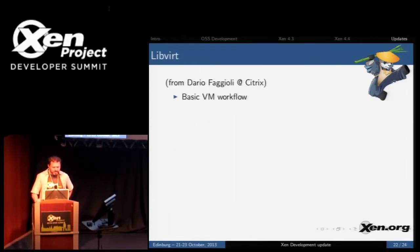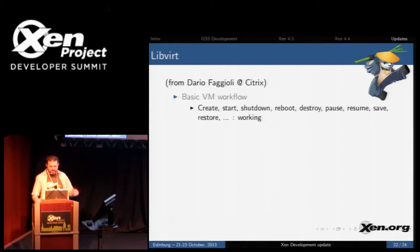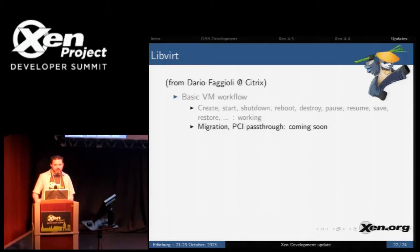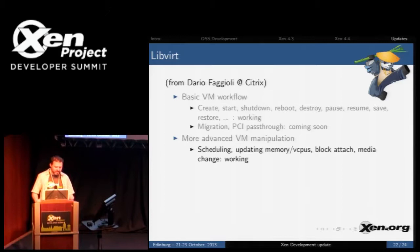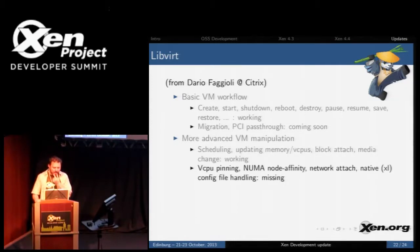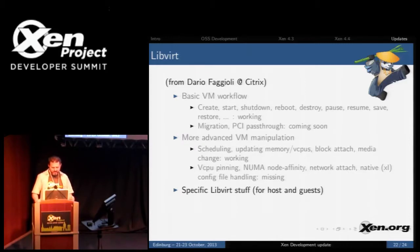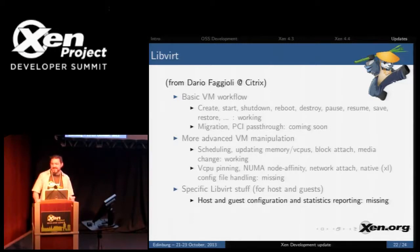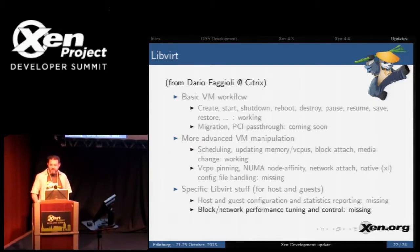LibVirt update from Dario: the basic VM workflow works — create, shutdown, reboot, and so on. Migration and PCI passthrough are coming soon. For advanced VM manipulation, a lot of things are supported: scheduling, updating memory, vCPUs, block attach, and so on. Some advanced things are not yet working: vCPU pinning, NUMA affinity. Some specific things not yet supported in LibVirt include hosting guest configuration and statistics, and block and network performance tuning controls. If you're interested in using LibVirt, there are lots of good things you can do to help out.